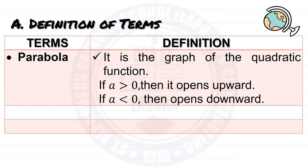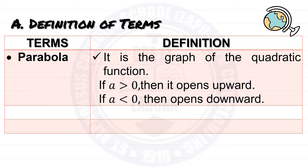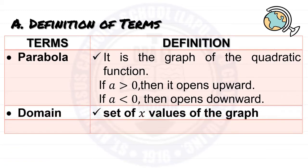The first term is parabola. Parabola refers to the graph of the quadratic function. If the value of a is greater than zero, or positive, then it opens upward. But if a is less than zero, or negative, then it opens downward.